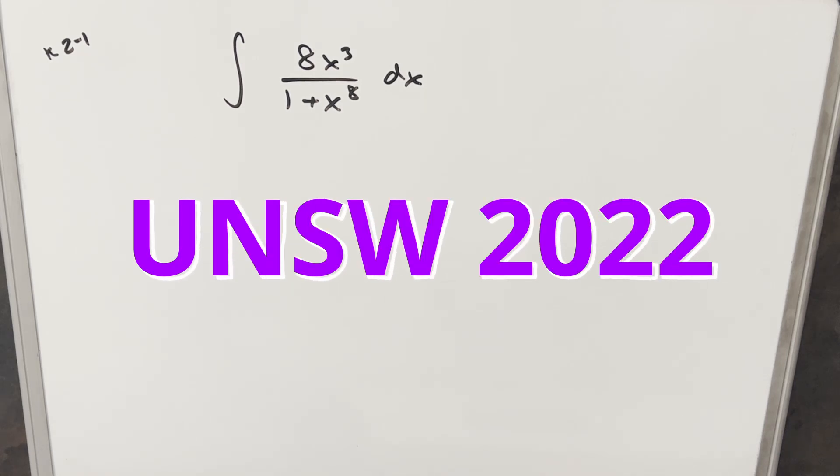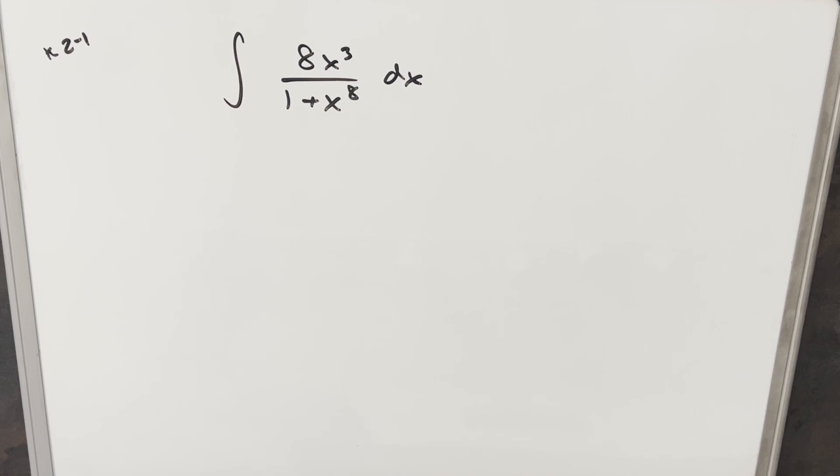Hey, we have a quick integral here on the board from the UNSW integration B 2022. This was knockout round two, problem one. We have the integral of 8x cubed over 1 plus x to the 8th dx.